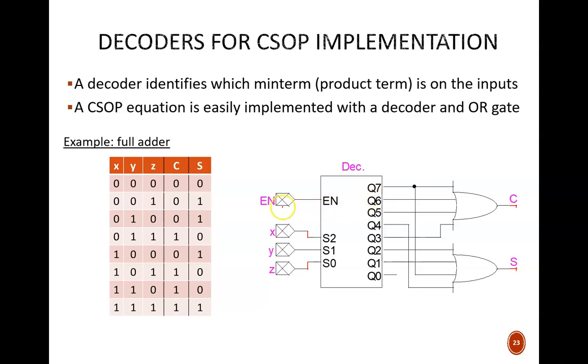Here's an example of a full adder. The truth table is shown here with its two outputs. The C output should equal 1 for these particular rows. In shorthand CSOP form, the equation can be written as shown here where we sum together minterms 3, 5, 6, and 7.